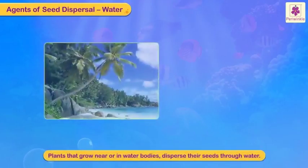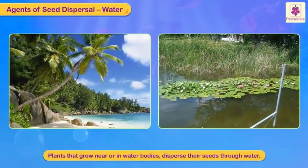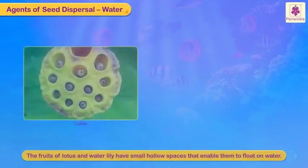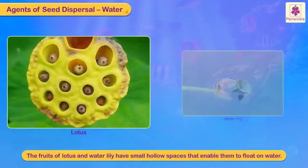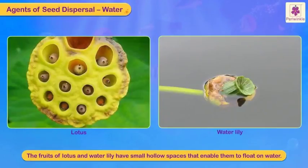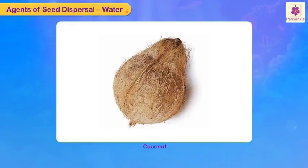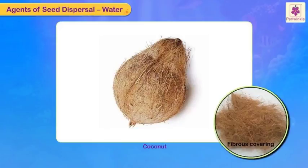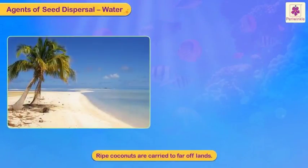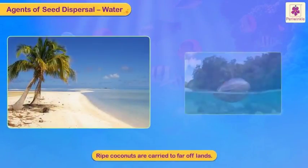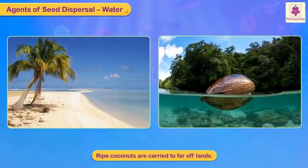Plants that grow near or in water bodies disperse their seeds through water. The fruits of lotus and water lily have small hollow spaces that enable them to float on water. Coconuts have a fibrous covering that makes them light. Ripe coconuts which fall naturally into water are carried to far-off lands.